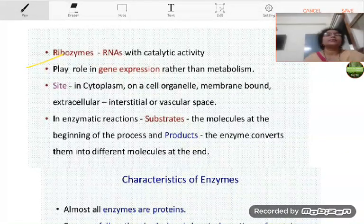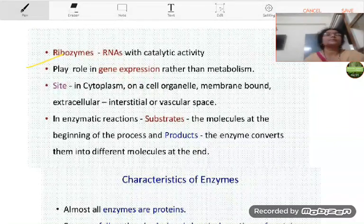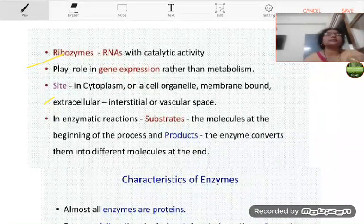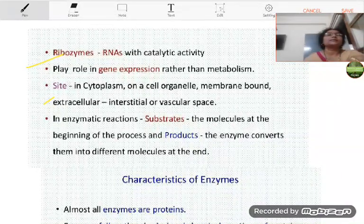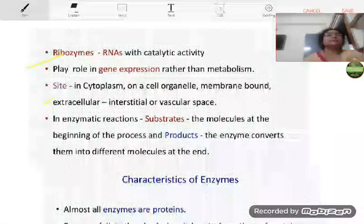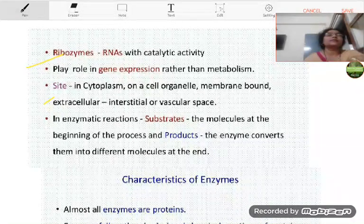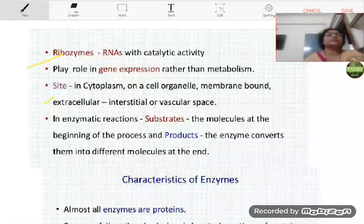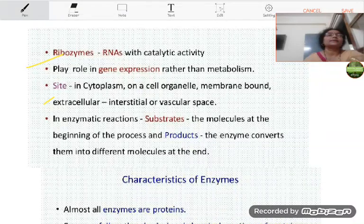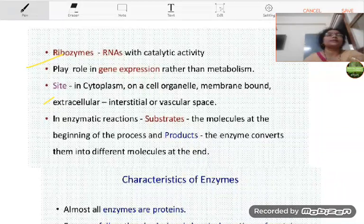RNAs play role in gene expression rather than metabolism. And as we all know that the site of these RNAs is in cytoplasm, on a cell organelle. And in enzymatic reactions, substrates are the molecules at the beginning of the process and products the enzyme converts them into different molecules at the end.